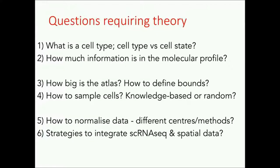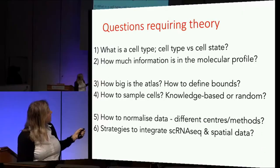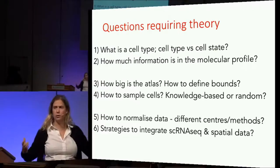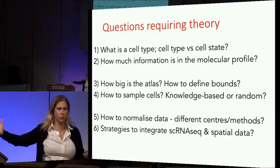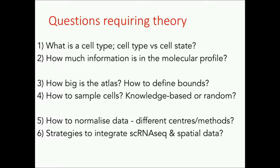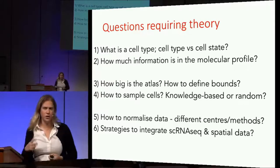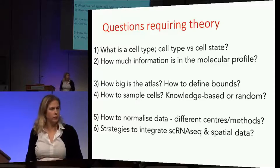What are the fundamental questions that require theory to address them? I've named six here. Donna and John have thought about this a lot, and we'll discuss these during the breakouts over the next days. There's, of course, cell type and cell state. How much information is actually encoded in the molecular profile? How big is the atlas? How are we going to define its bounds and focus? How are we going to sample cells — knowledge-based, random, or a combination of both? How will we normalize and integrate in order to have a reference that amalgamates data from different centers and methods? This is really key for the cell atlas to add value as a global consortium. What are the strategies to integrate single-cell RNA sequencing and the spatial data? I want to concentrate now for a few minutes on how much information is encoded in the molecular profile and how computational methods can extract knowledge from the data. I'll also talk about the interface between single-cell RNA sequencing and spatial data.